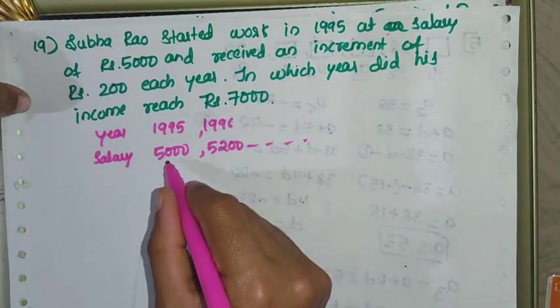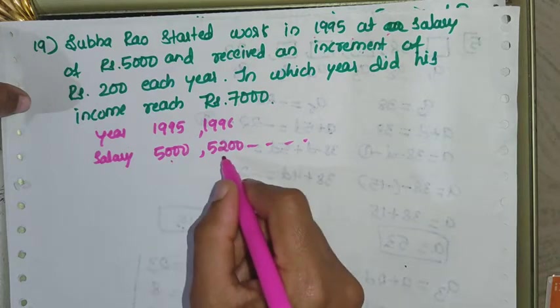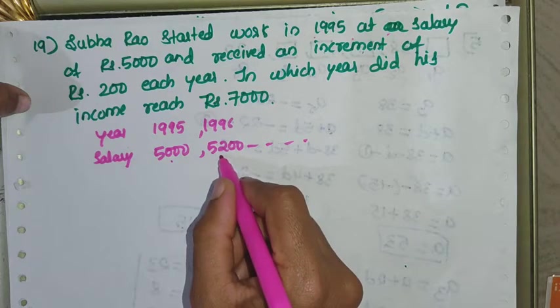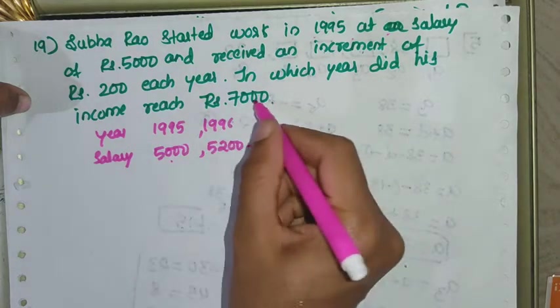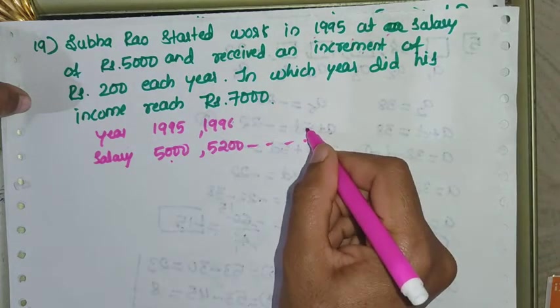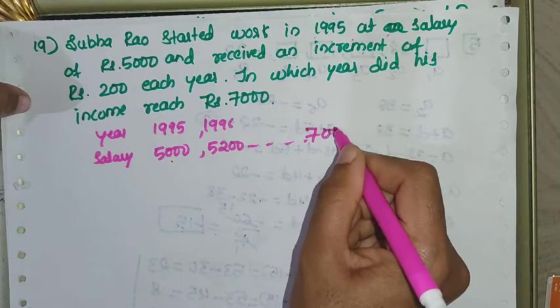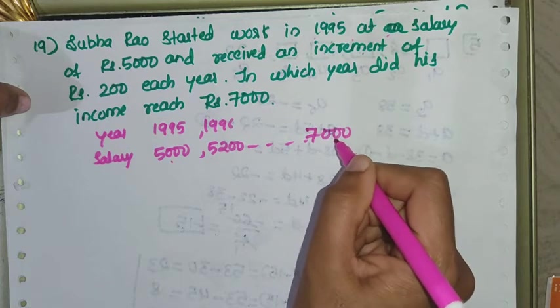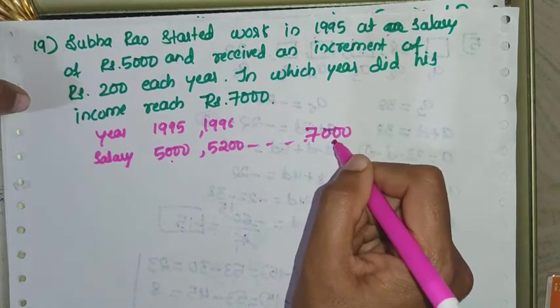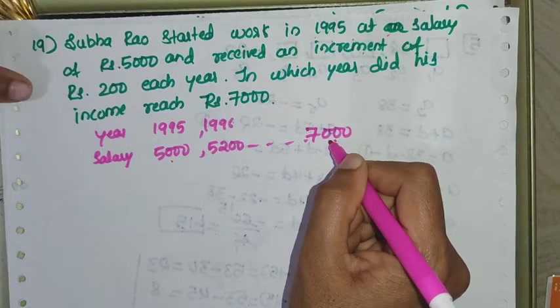First year Rs. 5000, second year Rs. 5200. We need to find in which year the salary reaches Rs. 7000, so the nth term equals 7000.